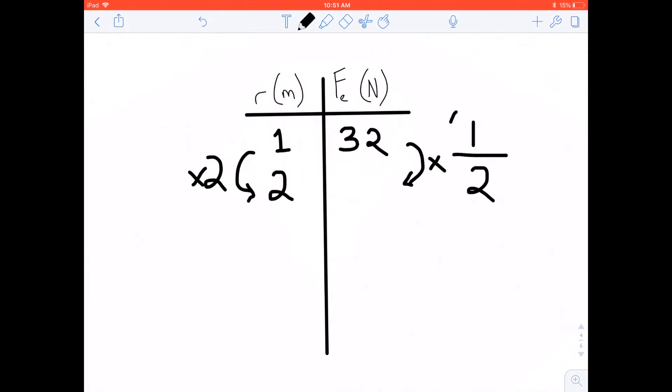It's the inverse square. So, it's one half squared. And if you guys know your math, then you know that one half squared is one fourth. And 32 times one fourth is eight.